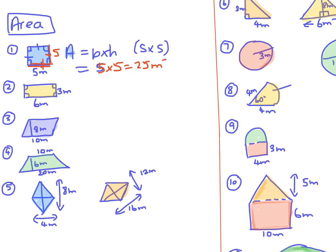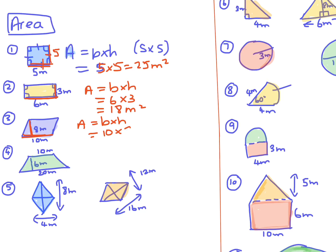That gives 25 meters squared. For the rectangle, the area is base times height, so it's 6 times 3 which is 18 meters squared. For the parallelogram, the area is base times height, so it'll be 10 times 8 which is 80 meters squared.